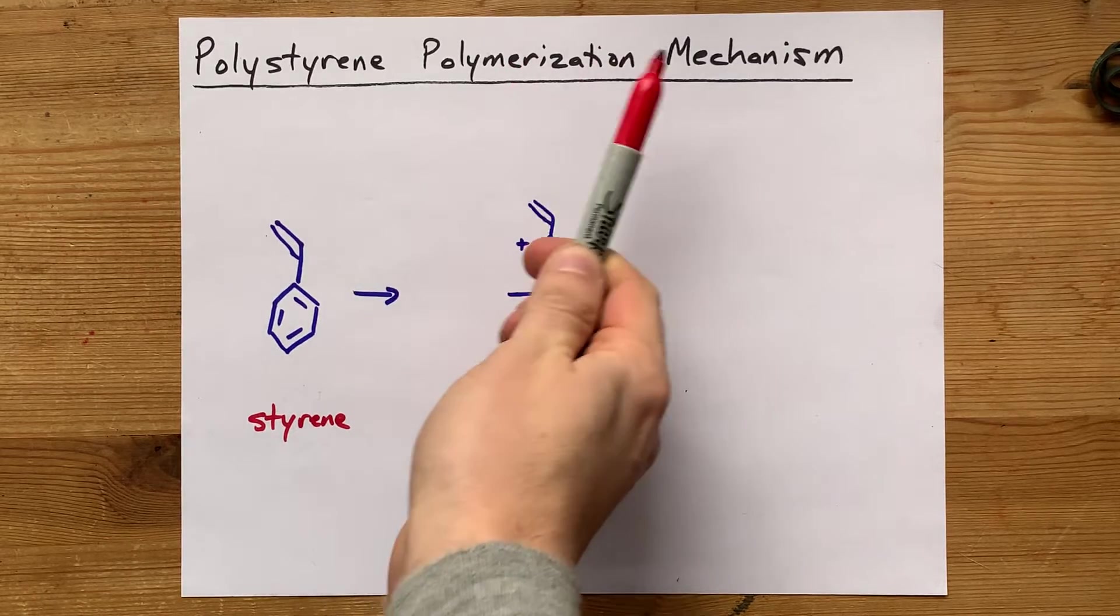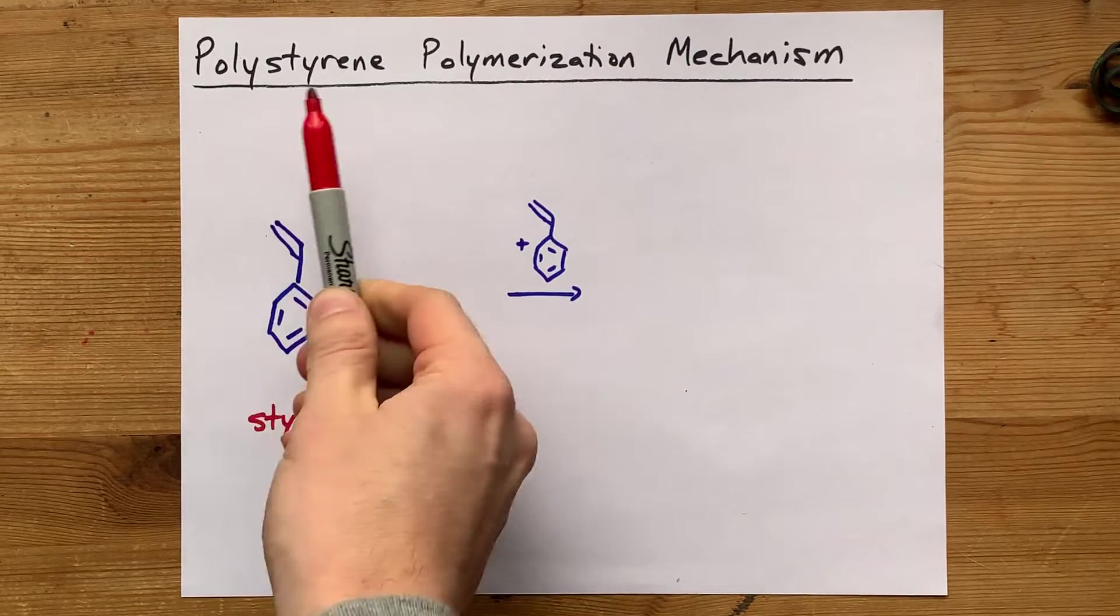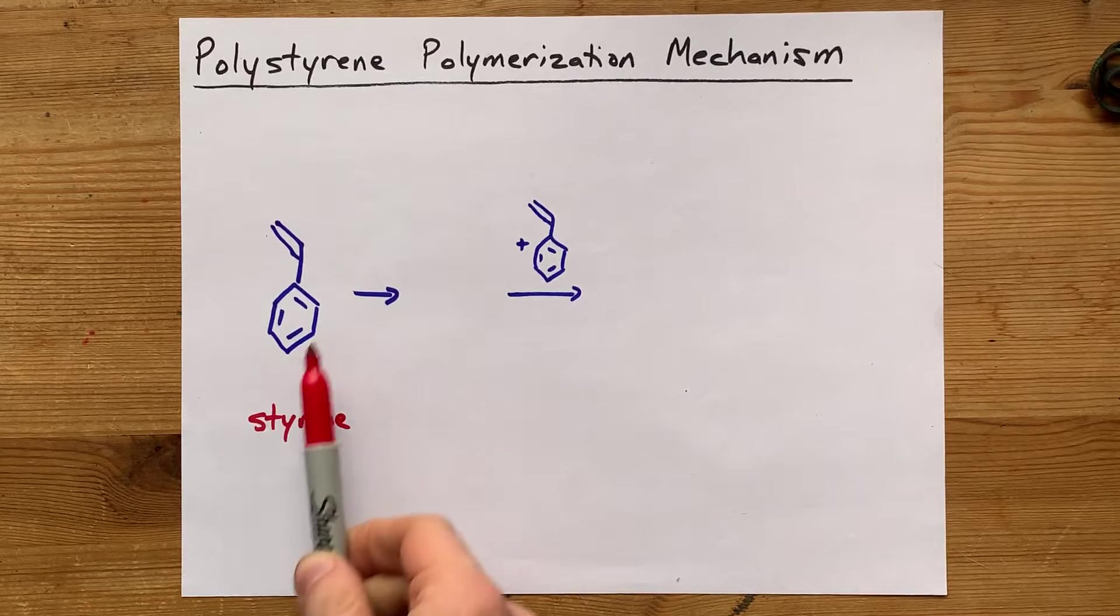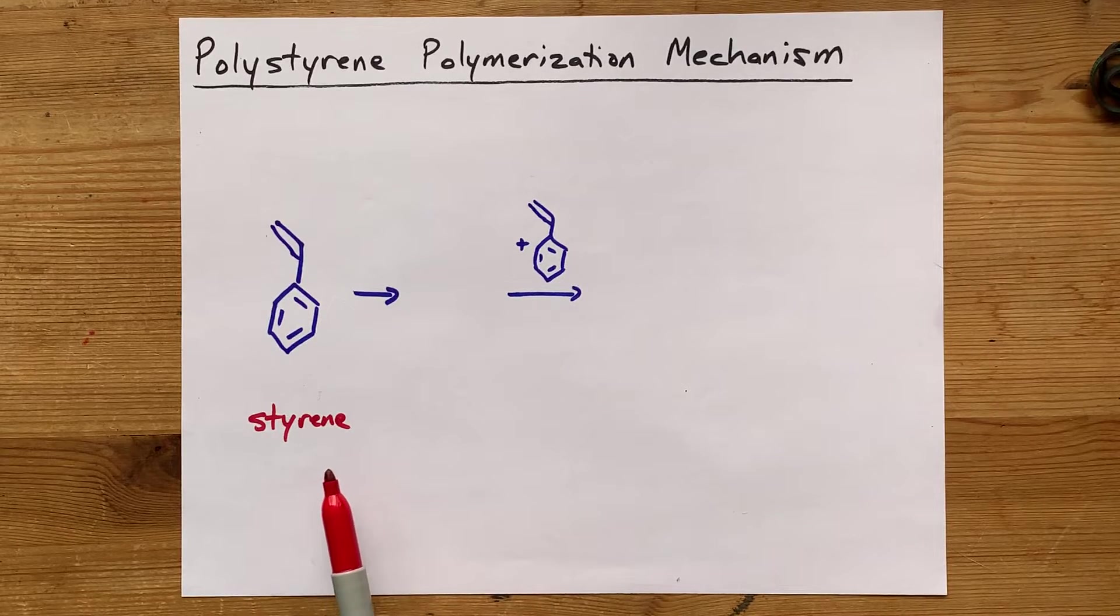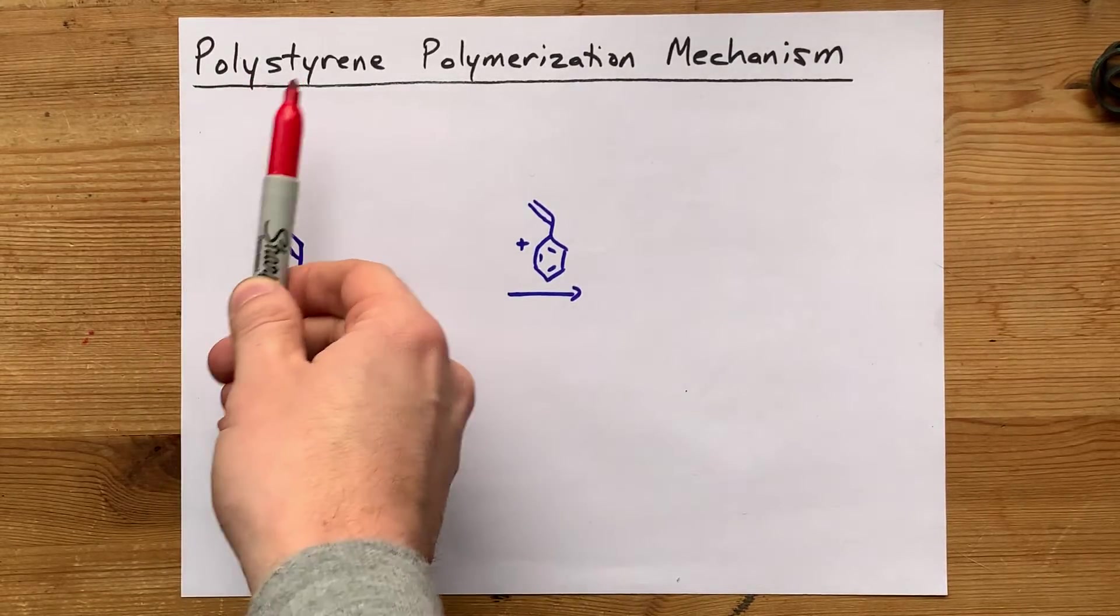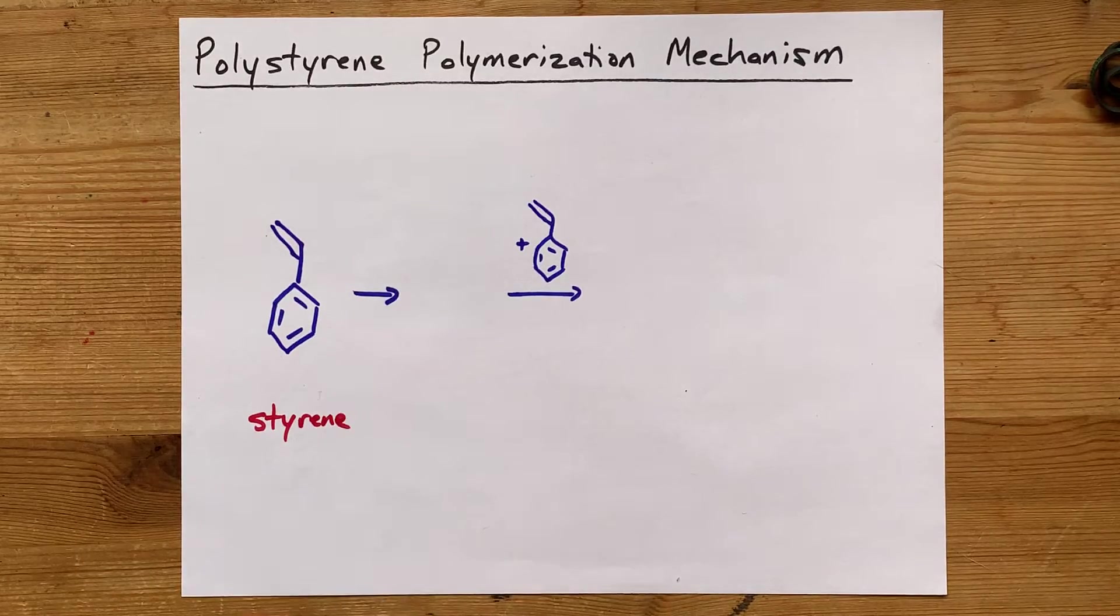Let's talk about the polymerization mechanism that creates polystyrene. You need some styrene monomers to start, because you make polystyrene out of many styrene monomers.